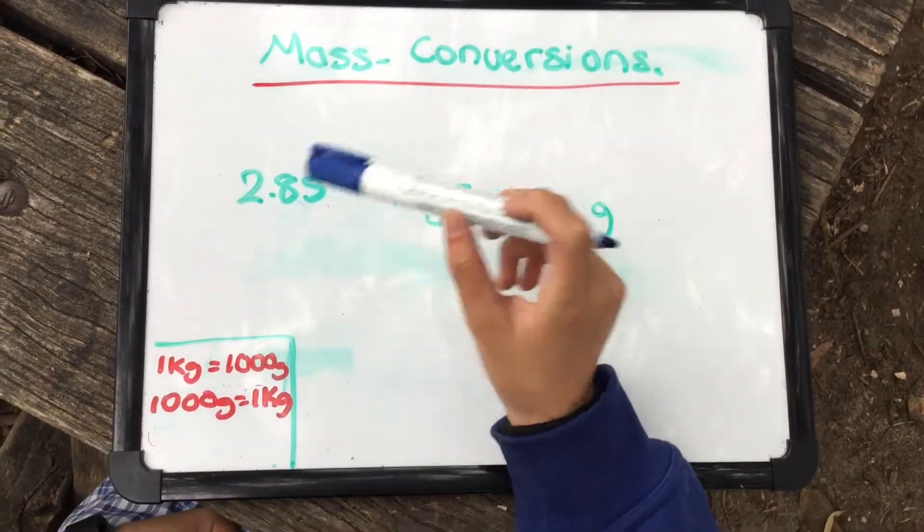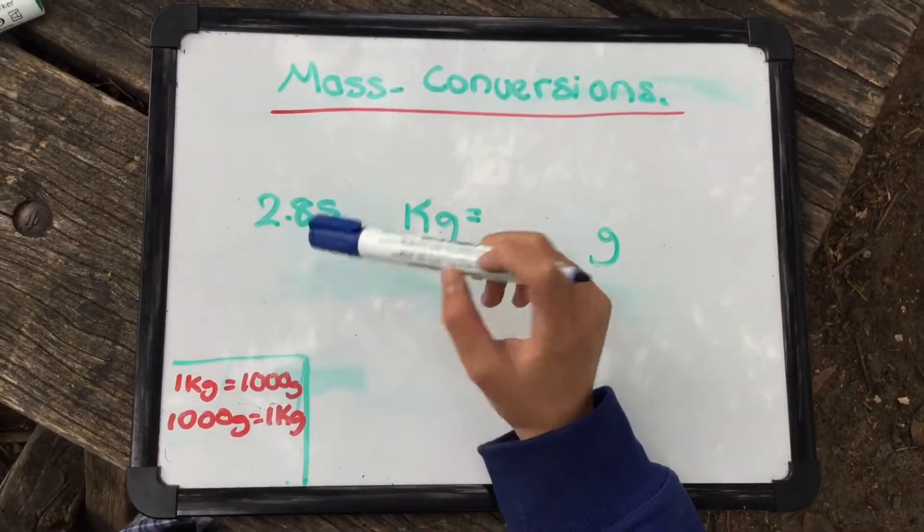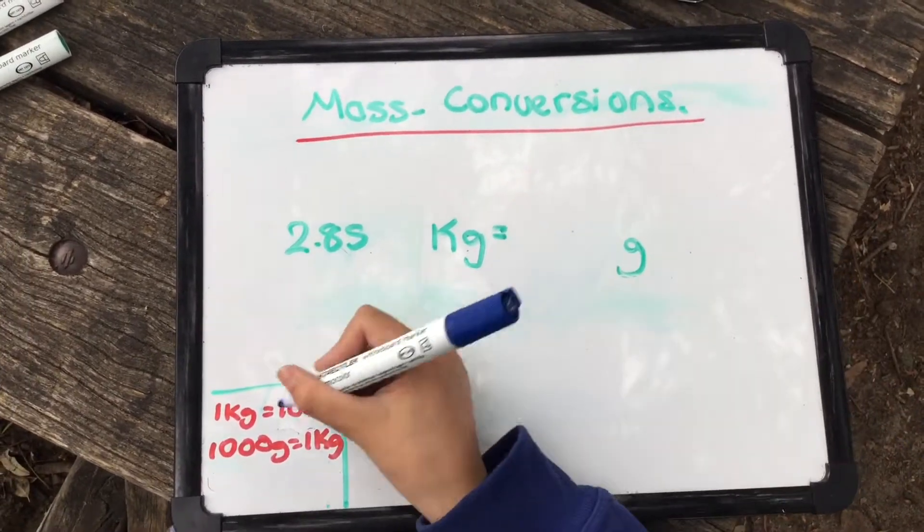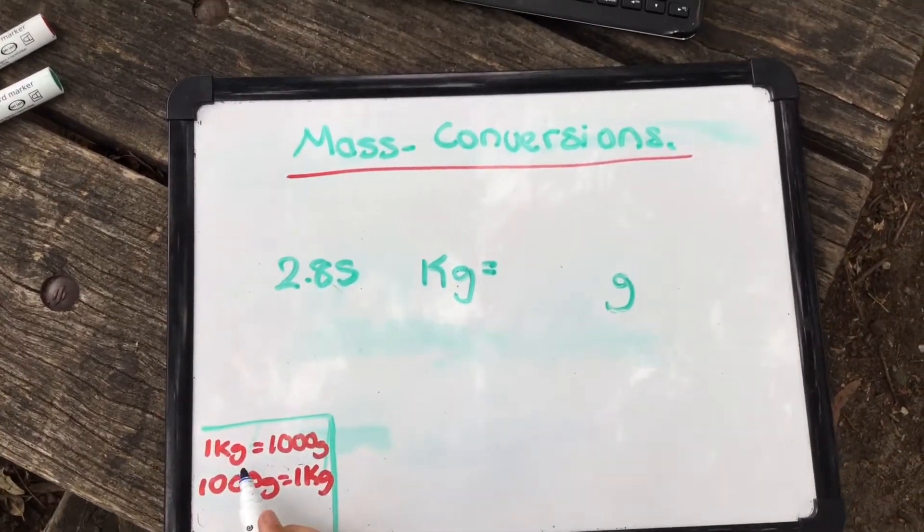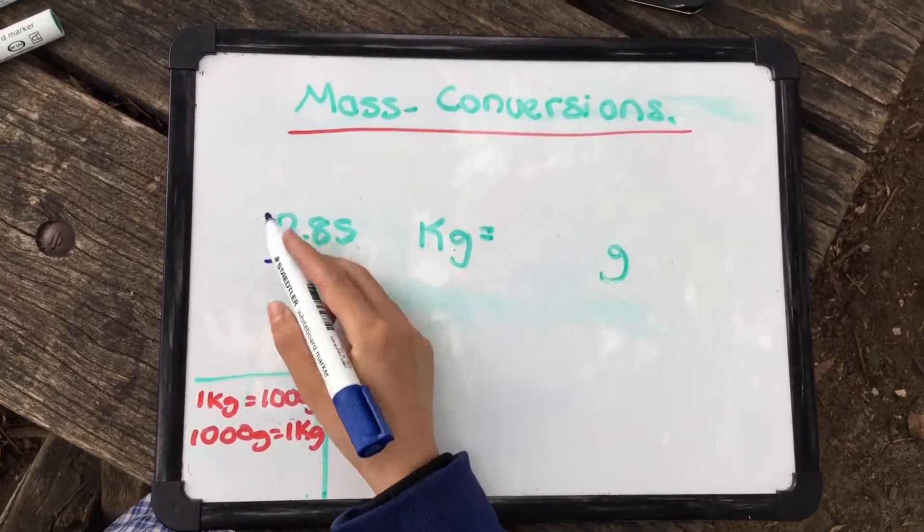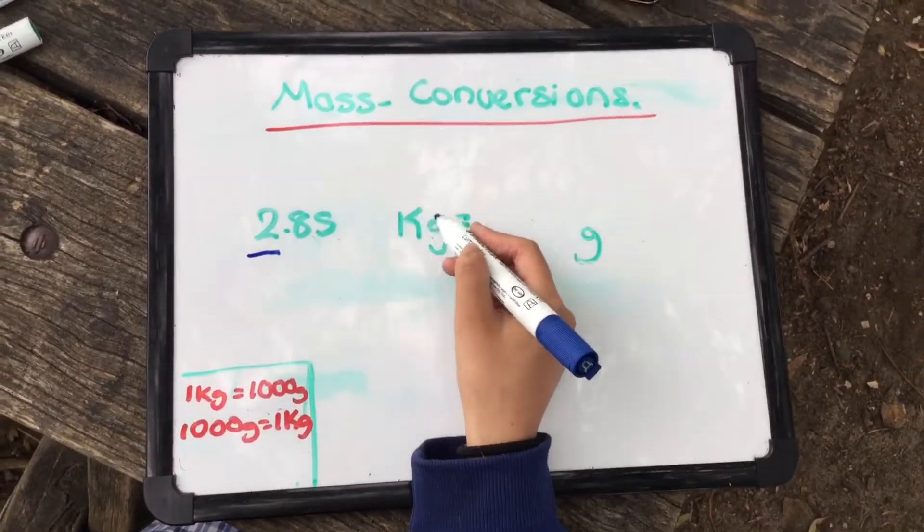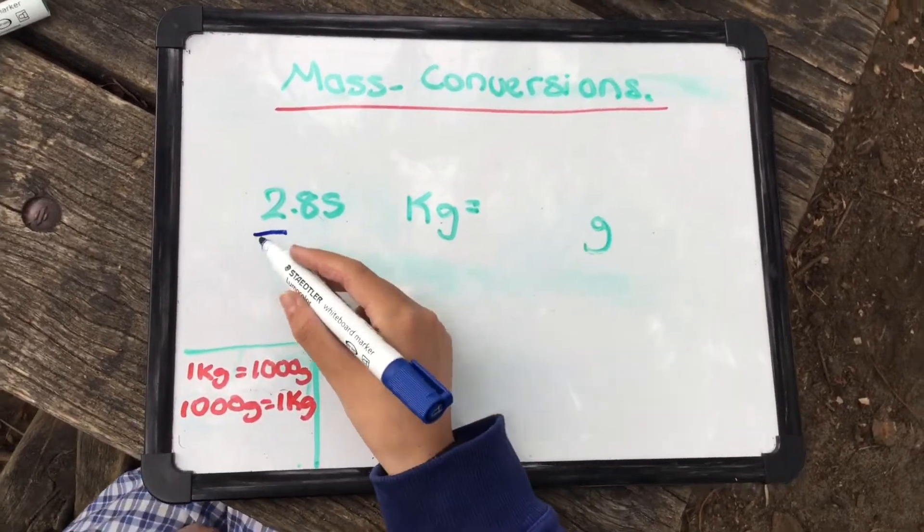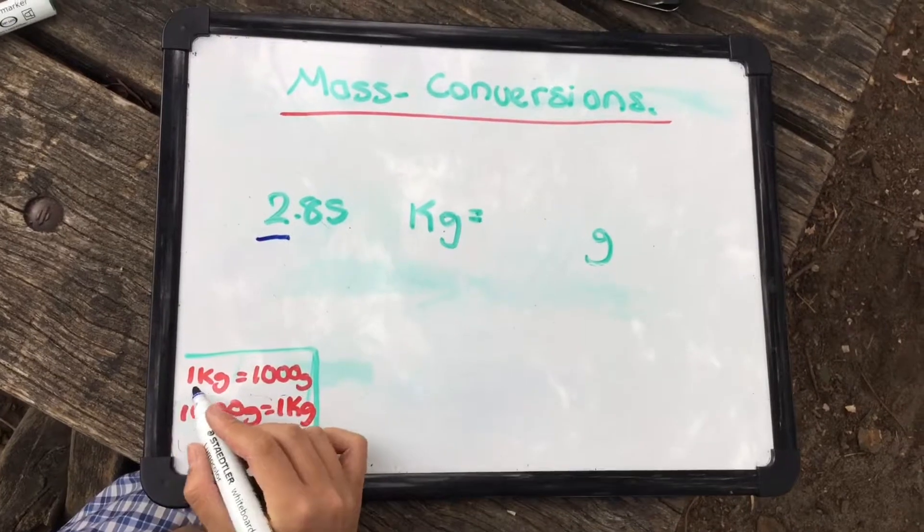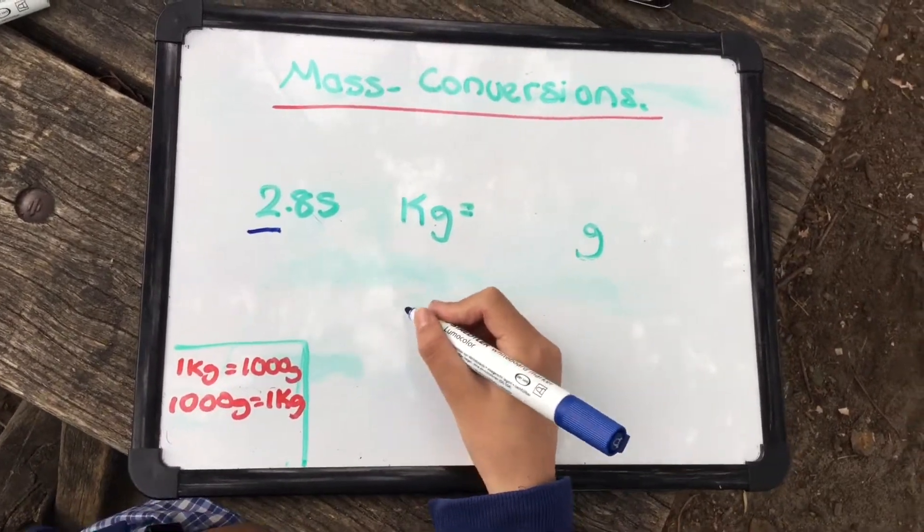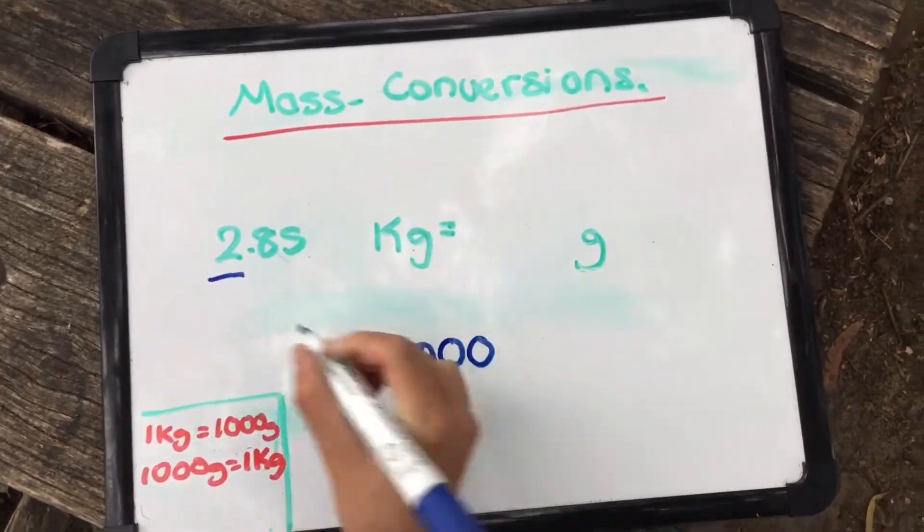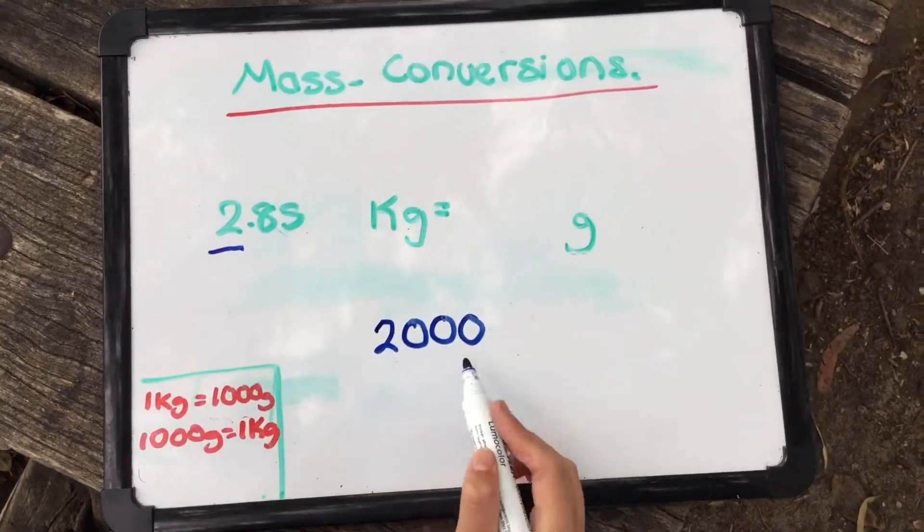Mass conversions. We are going to convert 2.85 kilograms into grams. First of all, we have to look at this, which says 1 kilogram equals 1000 grams. Here we have our whole number which equals to whatever the units are. So it is 2 kilograms. If we times that by 2, because 1 kilogram equals 1000, it's going to equal 2000. So this equals 2000 grams.